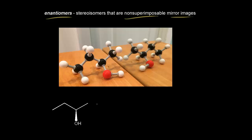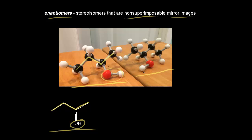Let's say we want to draw the enantiomer of this compound on the left. One way to do it would be to reflect this compound in the mirror. Looking at this carbon skeleton, we have our carbon skeleton with our OH group coming out at us in space. If we reflect this compound in the mirror, we'll see the enantiomer in the mirror. Our mirror image on the right is non-superimposable upon our model on the left.